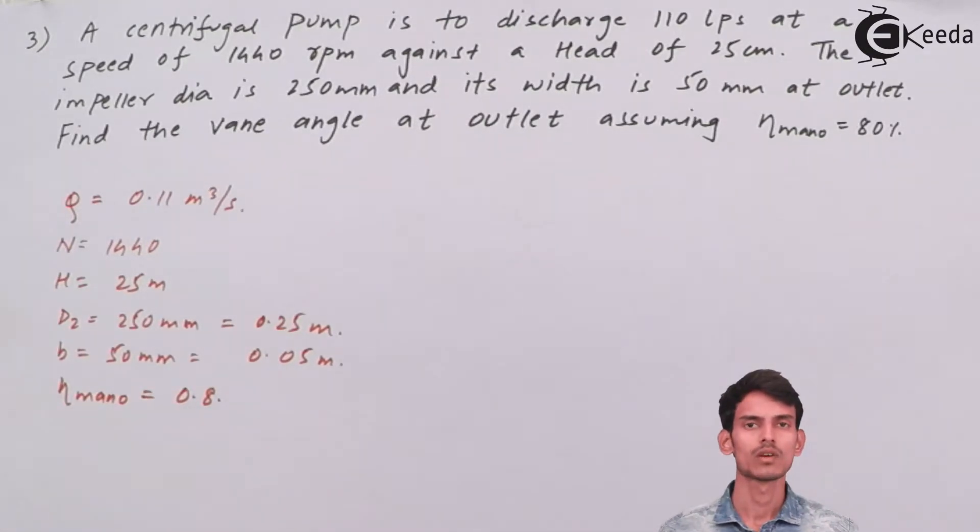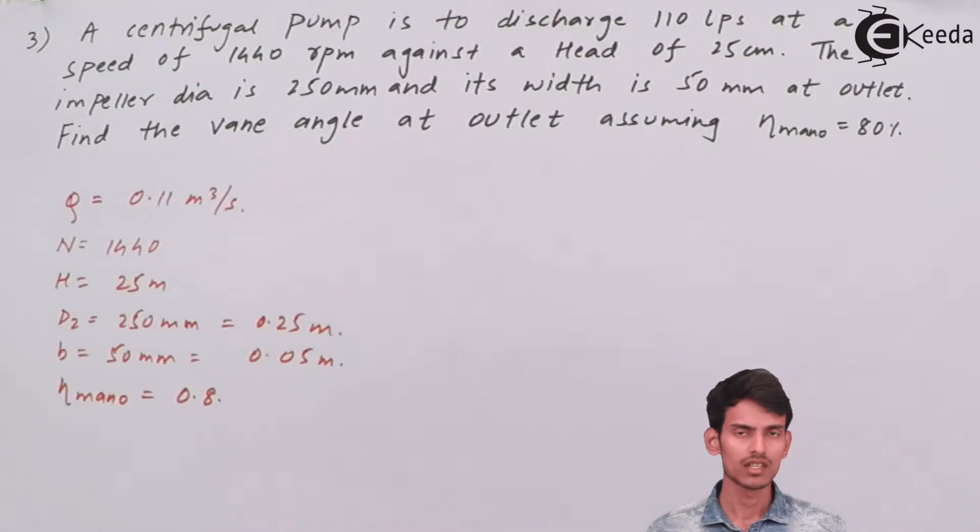I have written all the data that is given in the question. Now let's use the equation of discharge, and we can get the value of Vf2 because everything else is known.